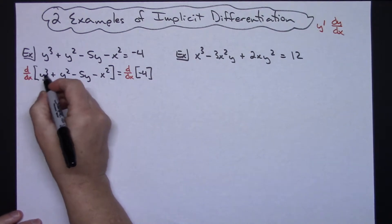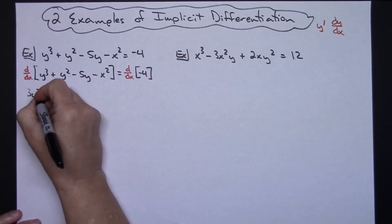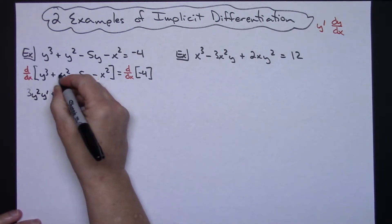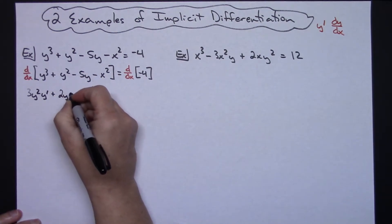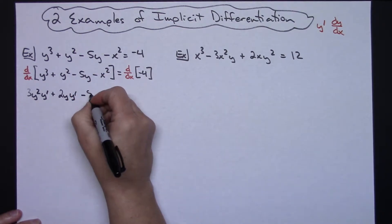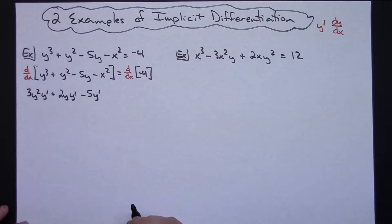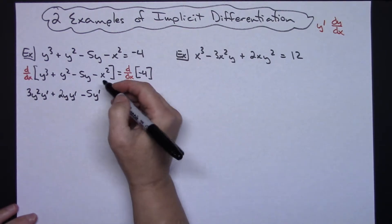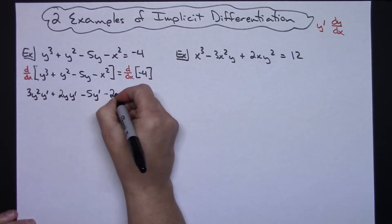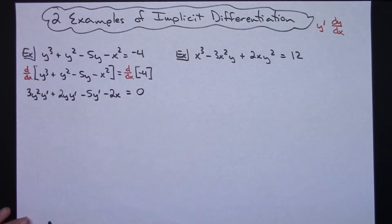Taking the derivative of y³ with respect to x gives 3y² and then I remember my y prime for the chain rule. Plus the derivative of y² is 2y, then y prime for the chain. The derivative of 5y is just 5, and I put the chain in — y prime — because each of those had y's in them. Now when I get to the x² term, it's all x's, so I can take a regular derivative: minus 2x.